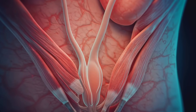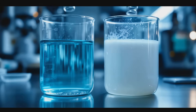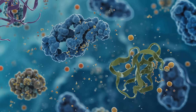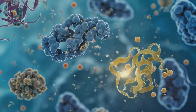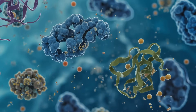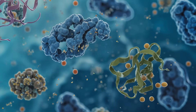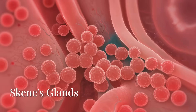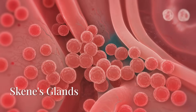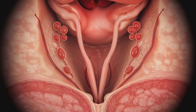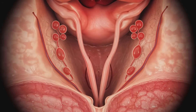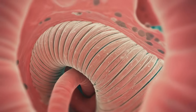These contractions control the release of fluid. The composition is remarkably similar to prostatic fluid, containing key elements like PSA and various enzymes. Rapid muscular contractions surrounding the urethra expel glandular fluid in a pressurized stream, a phenomenon known as squirting.